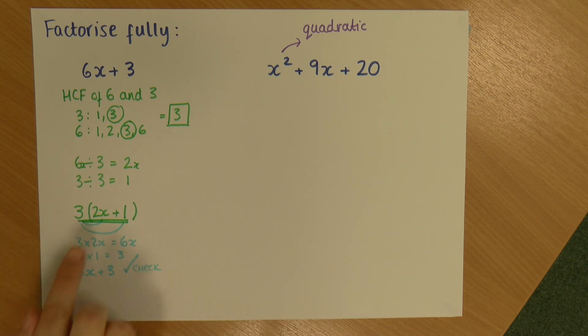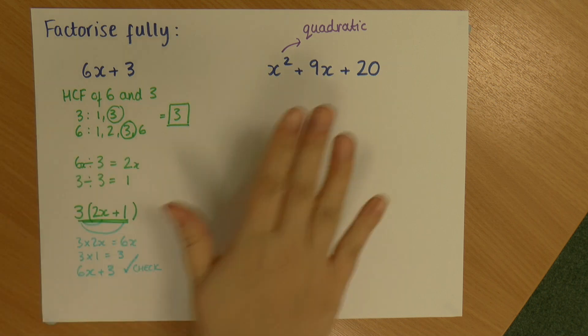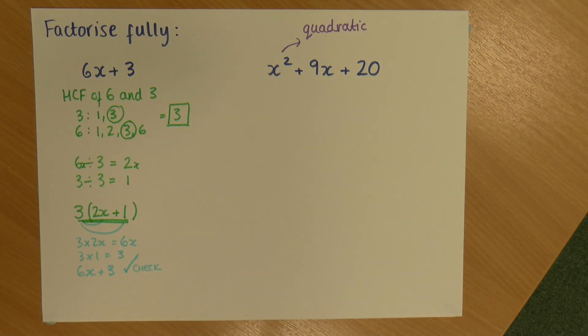Now this is fully factorised, and by using the highest common factor I'm guaranteeing it's fully factorised. If I just used any factor it would still be factorised but not factorised fully. So in order to factorise fully I need to use the highest common factor. Okay, let's have a look at our quadratic equation here.